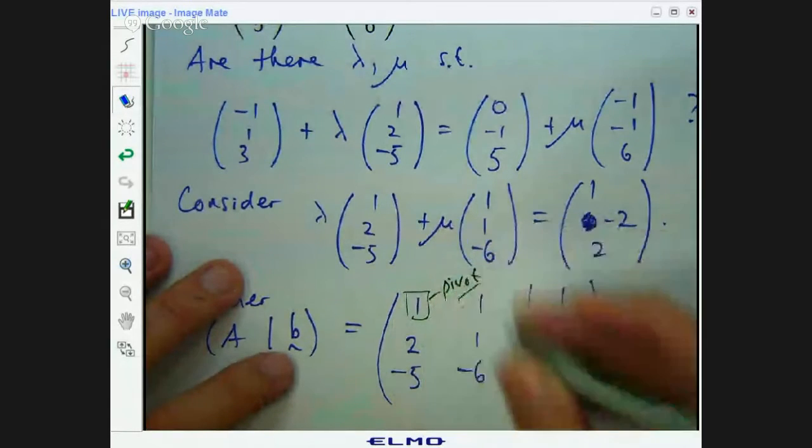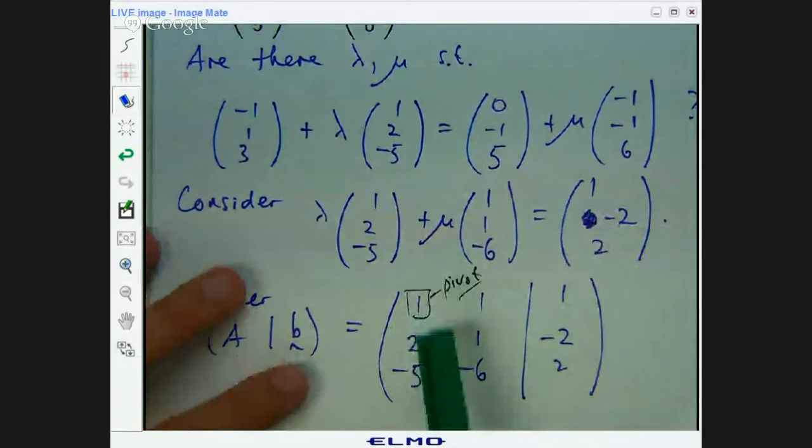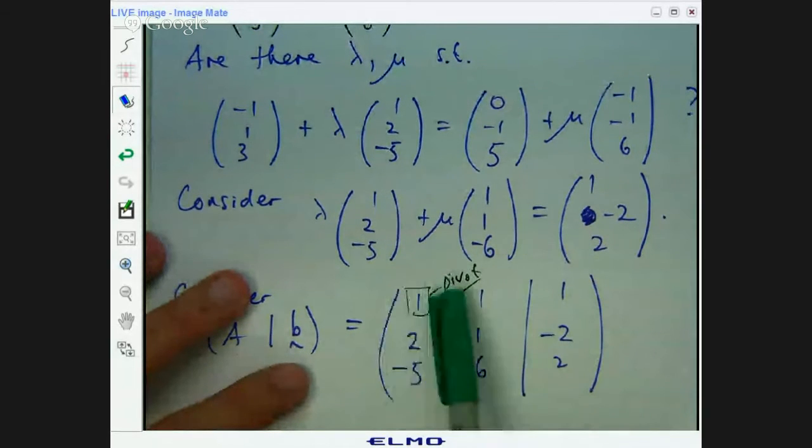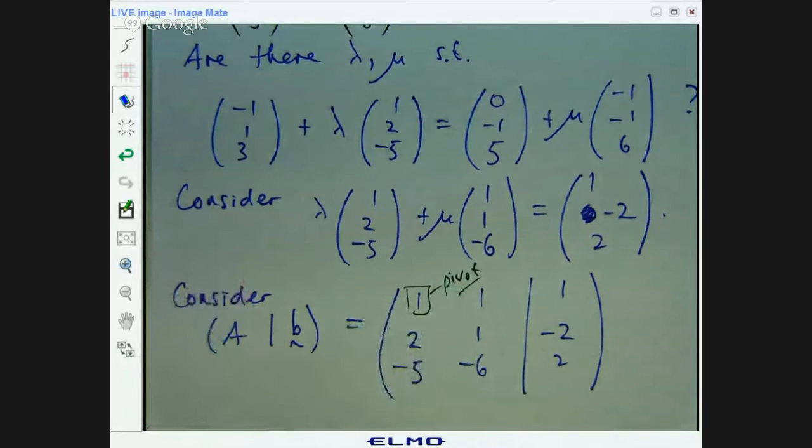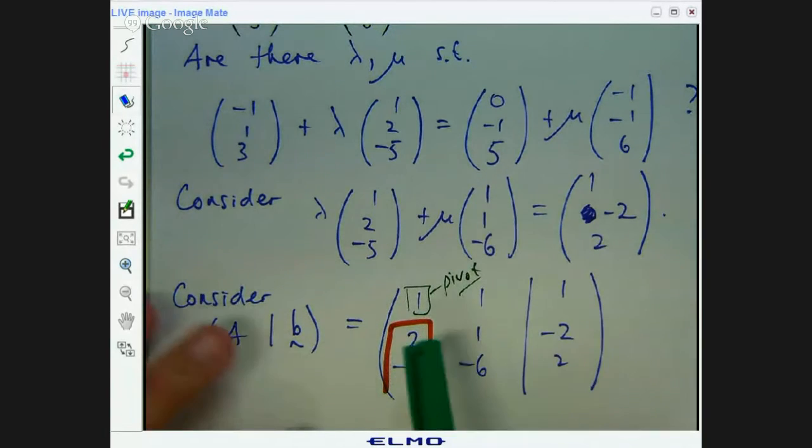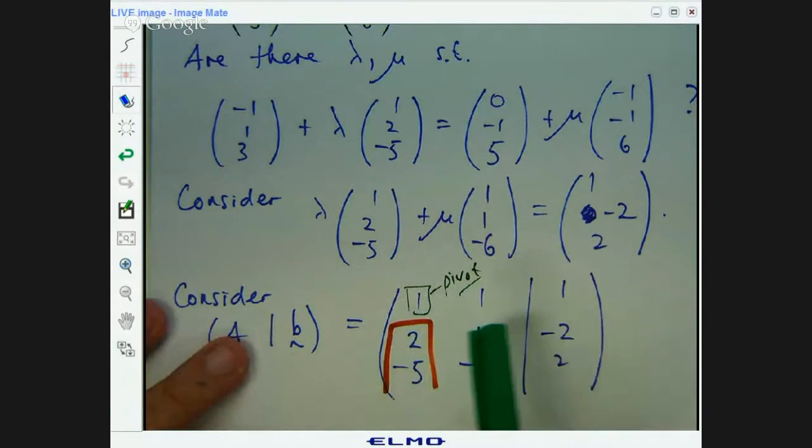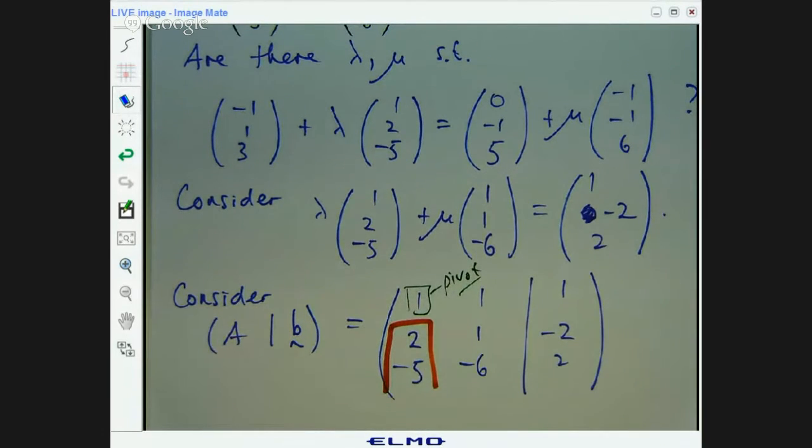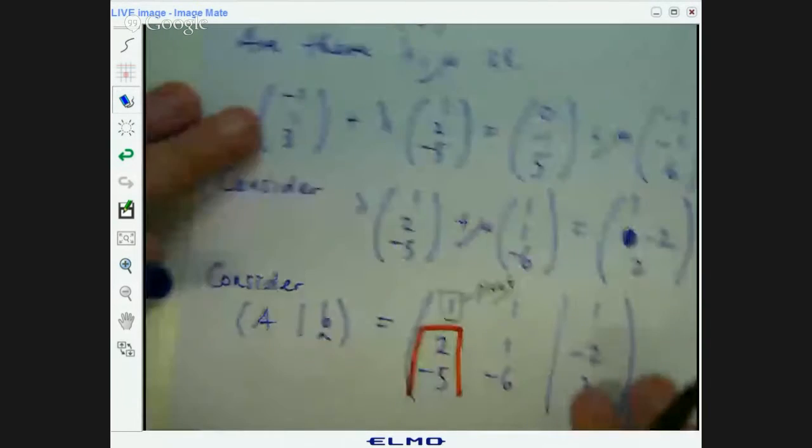With this one, we've got number one at the top left-hand corner. You can't do better than that. That's what we'll choose. And we want to make everything underneath that pivot entry equal to zero. Let's make that and that zero by doing some row operations. We would do row two equals row two minus two times row one. And row three equals row three plus five row one. Let's write those down and we'll perform the operations.